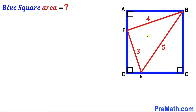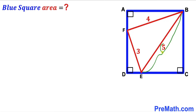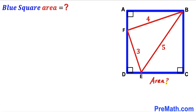Welcome to PreMath. In this video we have got a red triangle EFB fully confined in a blue square ABCD as you can see in the given diagram, such that its side length EF is 3 units, side length FB is 4 units, and side length EB is 5 units. Bear in mind that vertices E and F are on the blue square, and our task is to calculate the area of the blue square ABCD.